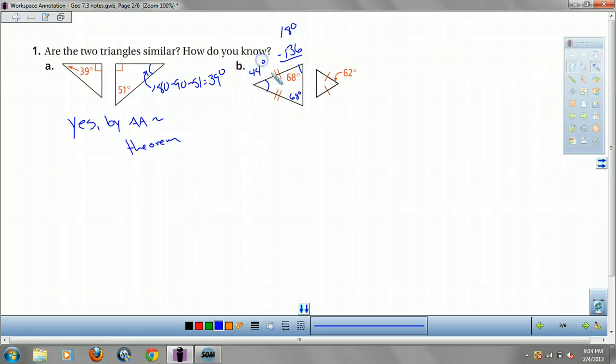So, this is 44 degrees. Well, wait a second. 68, 68, 44. Not 62. So, no. Not all angles are congruent.